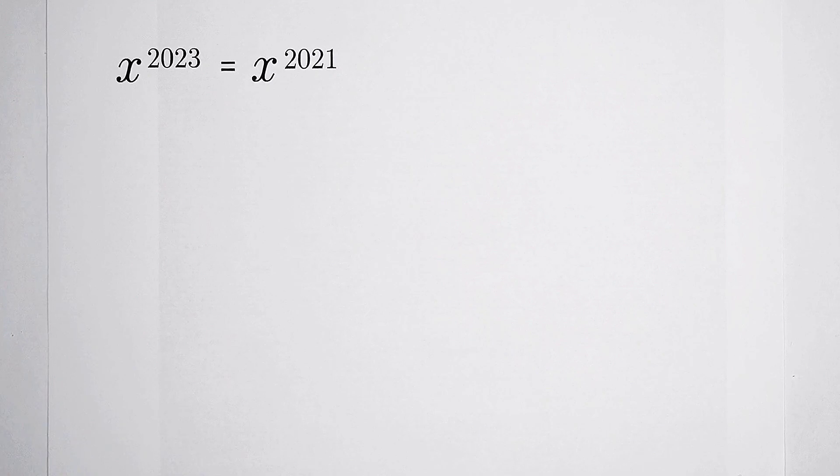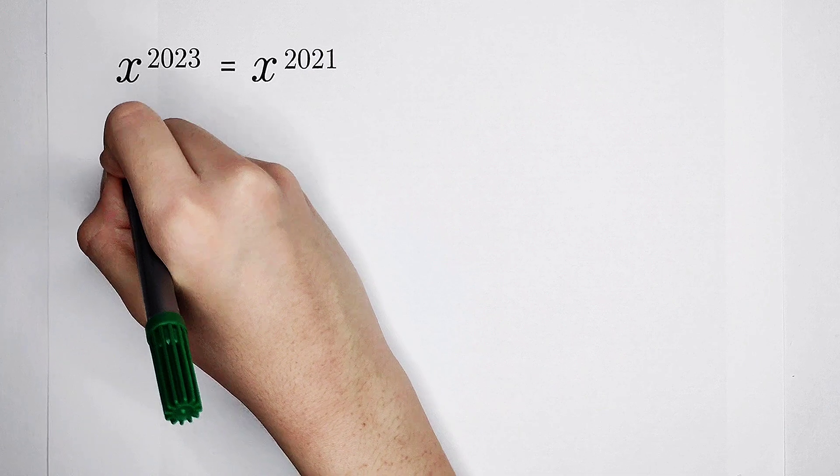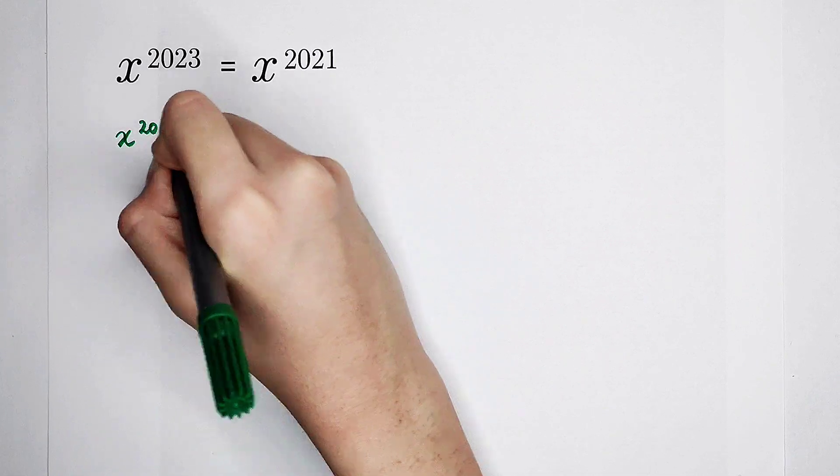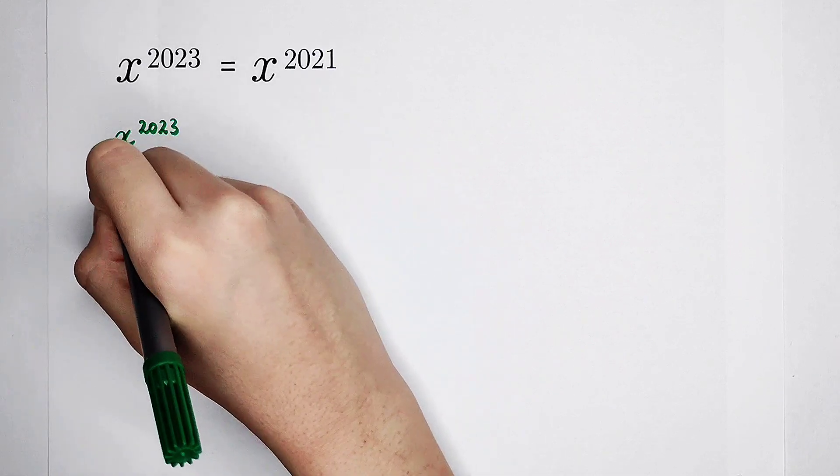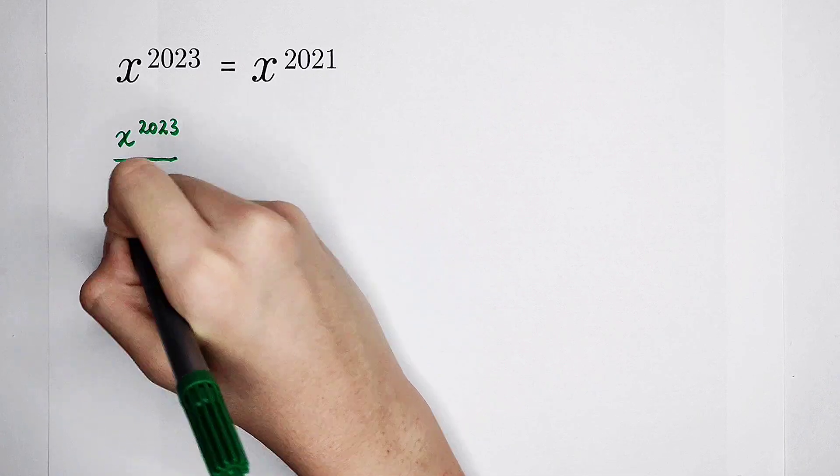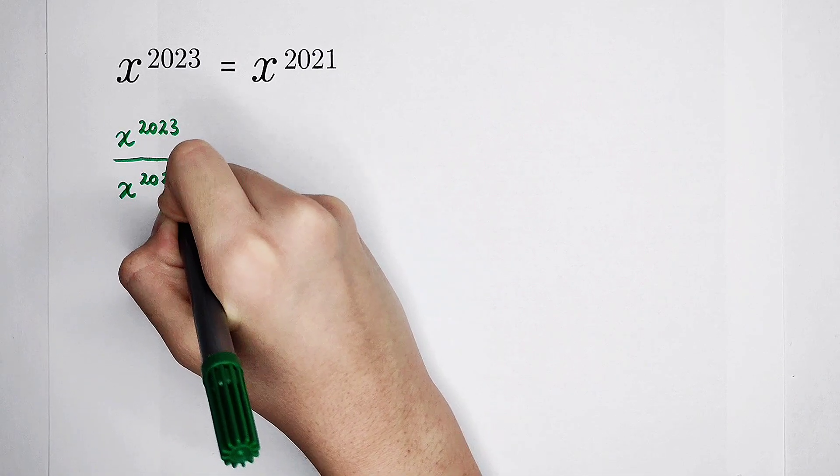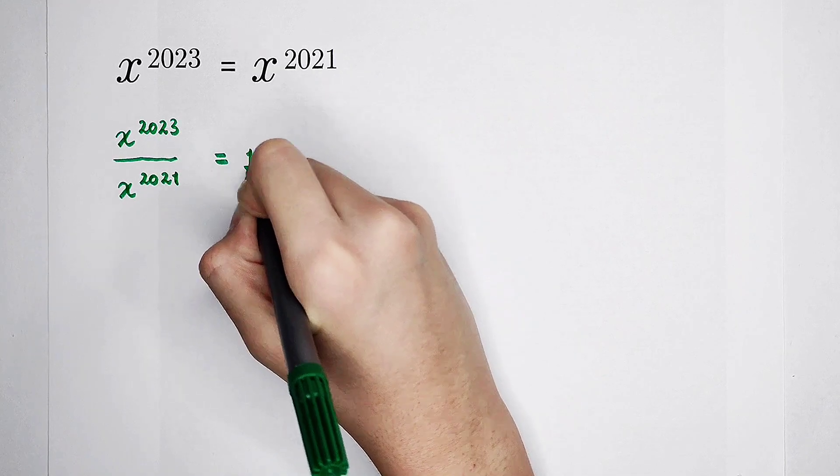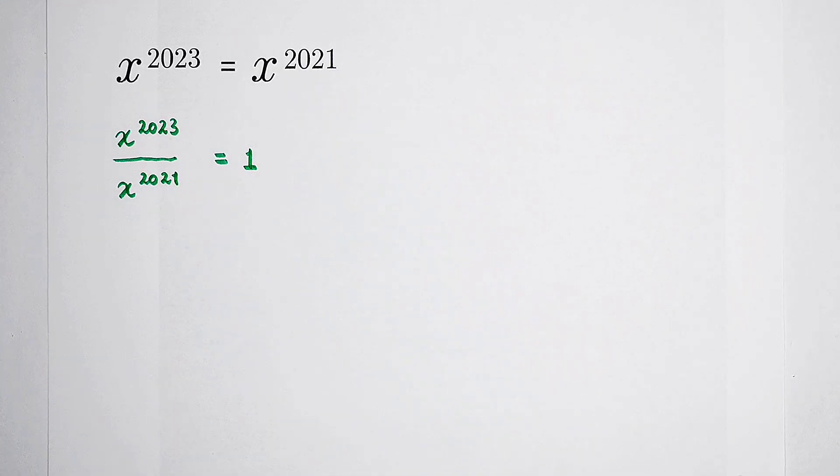If you divide both-hand side by x to the power of 2021, then the left-hand side is x to the power of 2023 divided by x to the power of 2021, and the right-hand side is just 1. How do you simplify it?